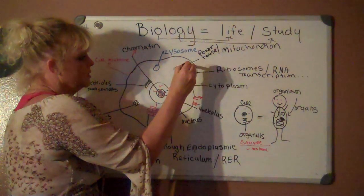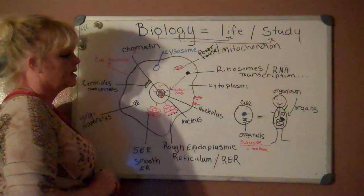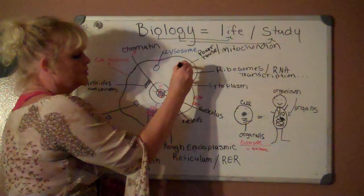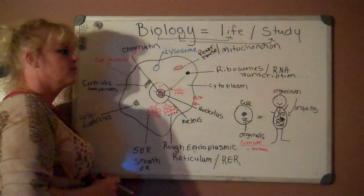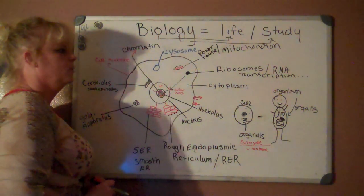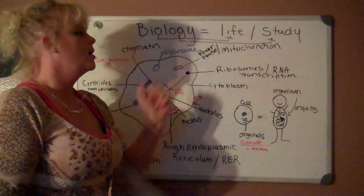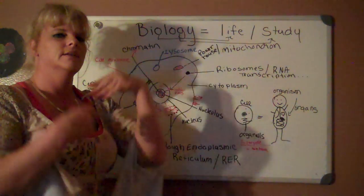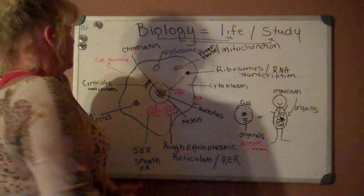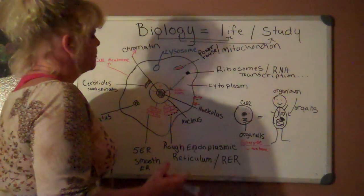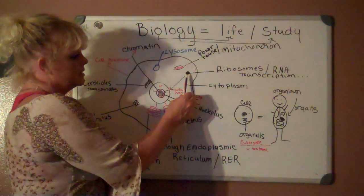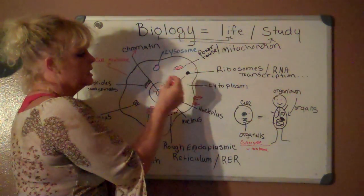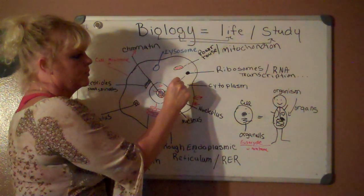Here we have a little organelle shaped almost like a bacteria, and you can see the little squiggles inside it. It also carries its own DNA. This is the mitochondria — remember it as the powerhouse, or the energy source of the cell.